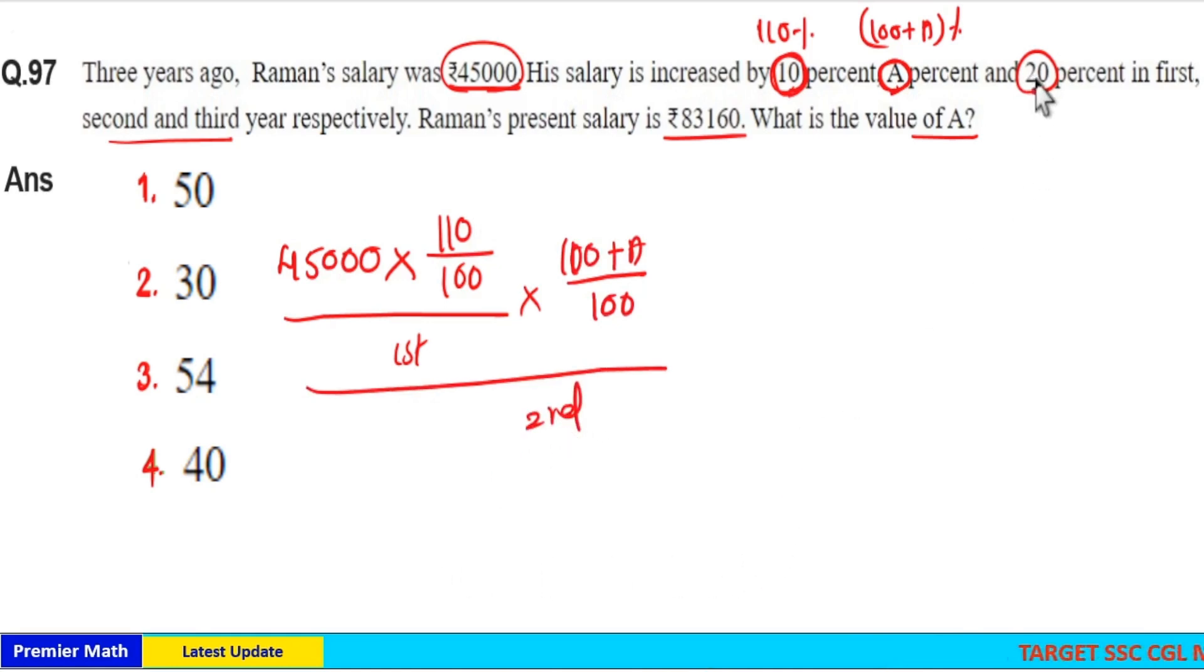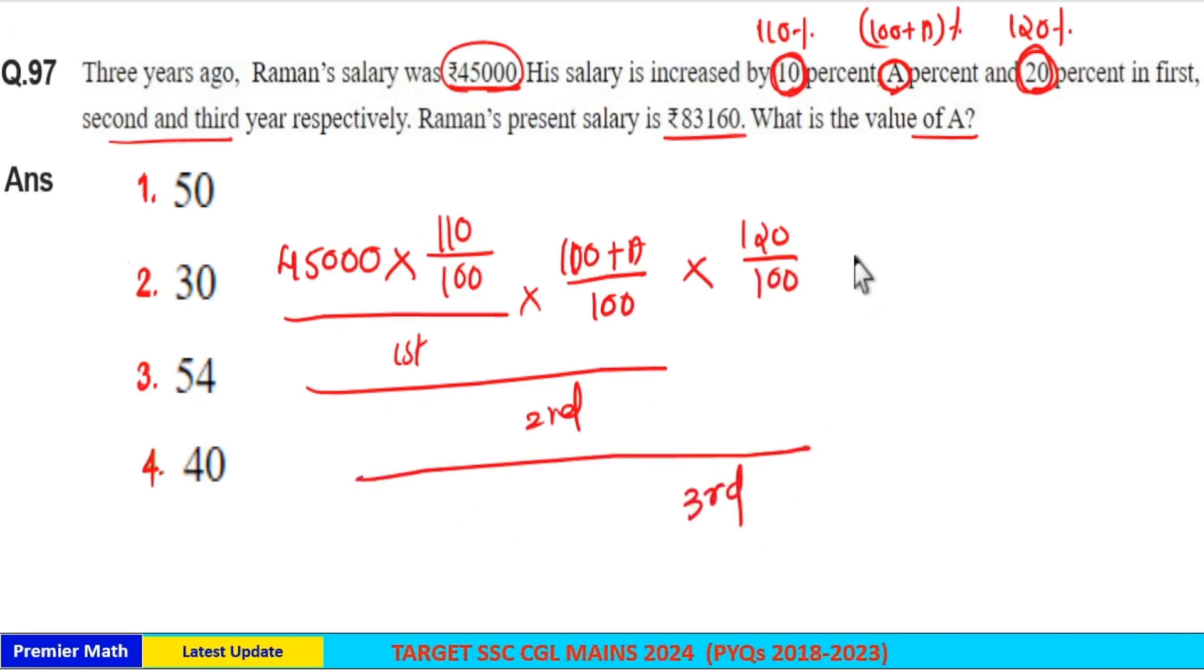Again in third year, increment is 20%. If I take 100% of second year salary, then 100 plus 20, which is 120%, is the increment in the third year. So 120 by 100 of second year salary is the third year salary. Now here, third year salary is given as ₹83,160.